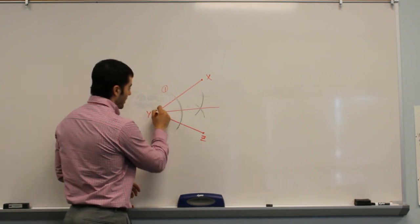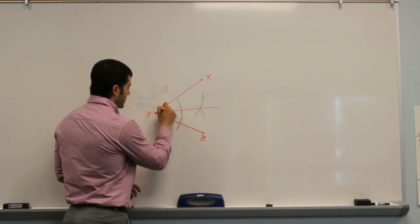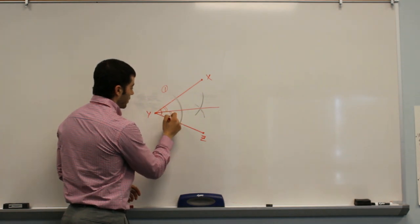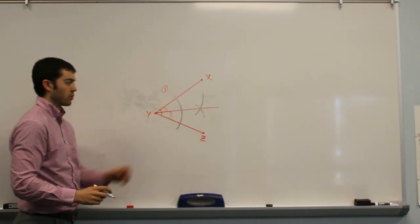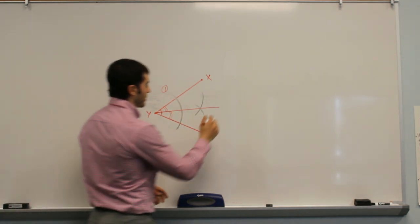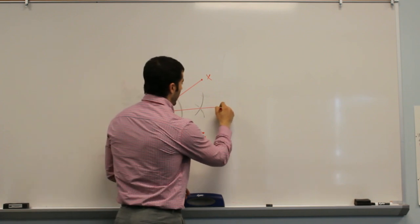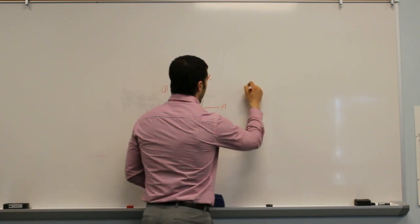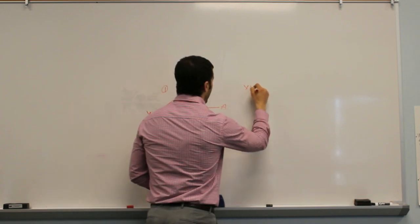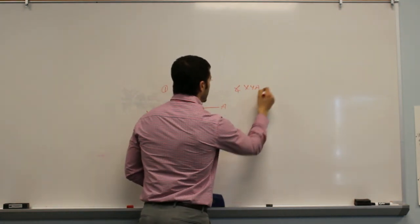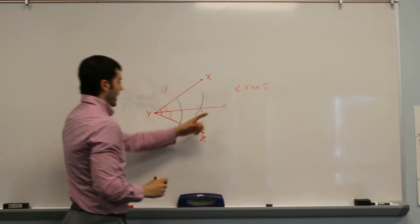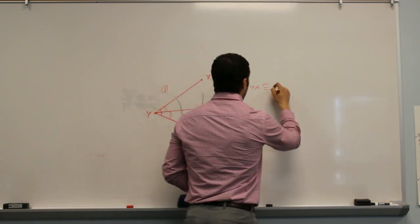In other words, we've cut this angle in half, so that this angle and this angle are congruent. If we were to label this point A, then what we could say is that angle XYA is congruent to angle AYZ.